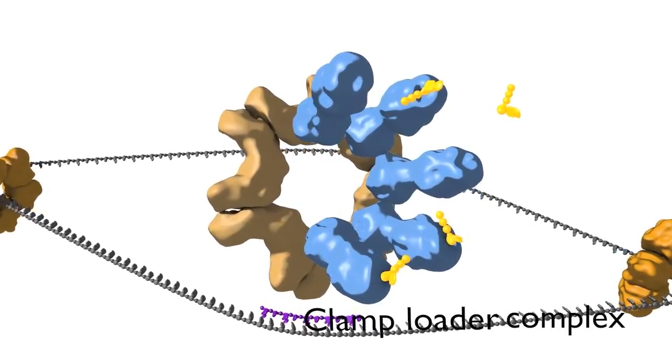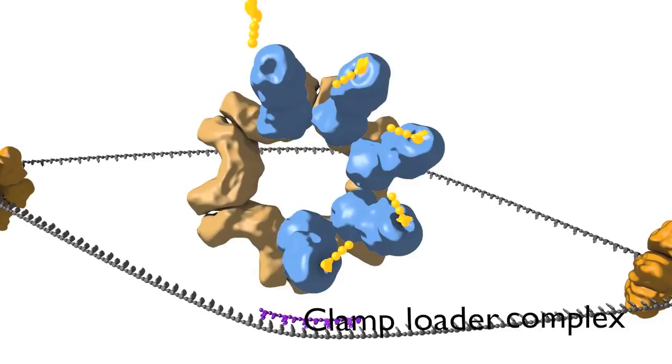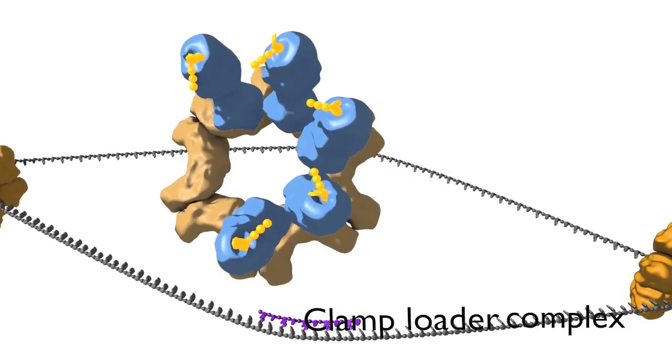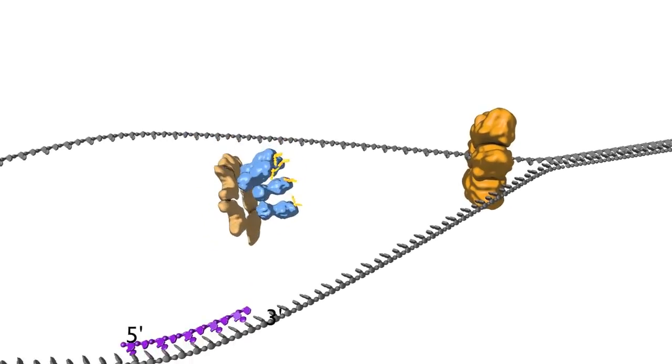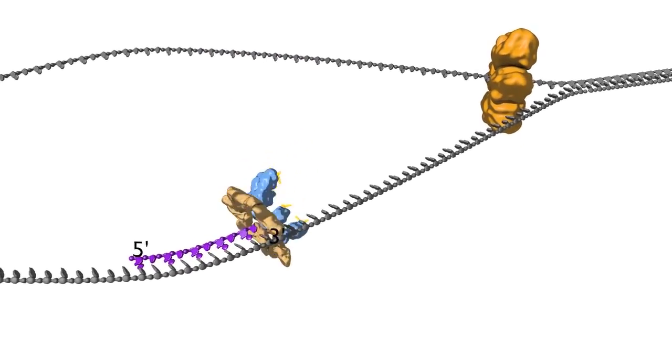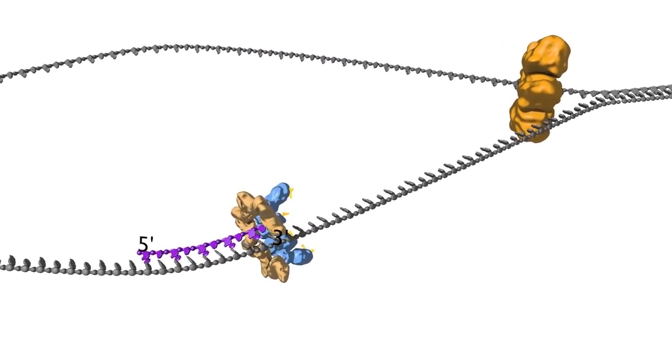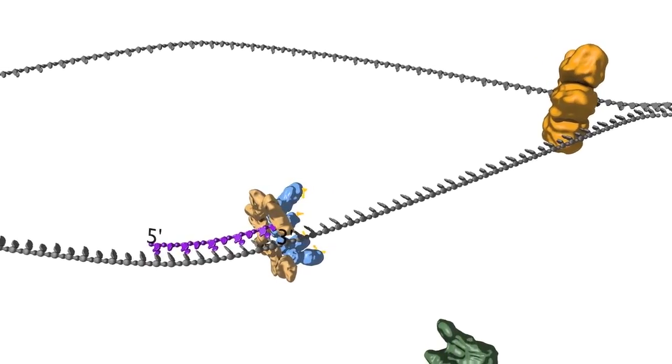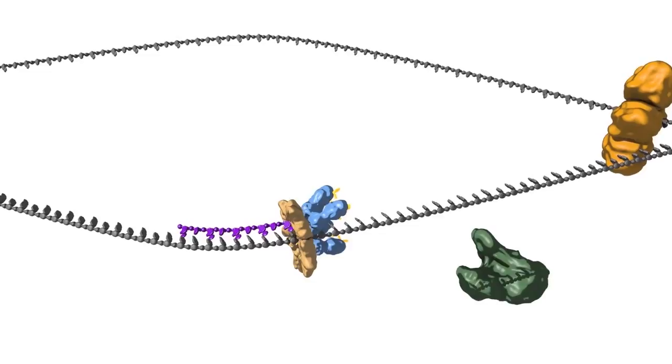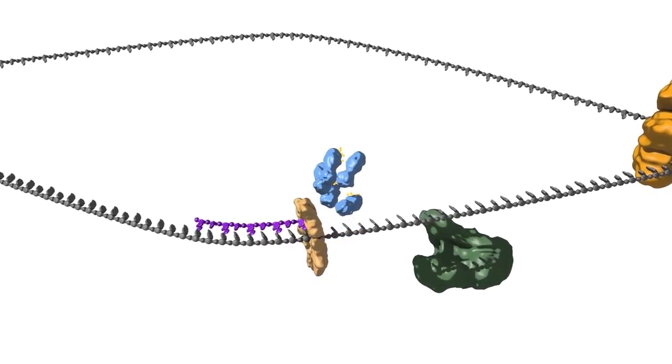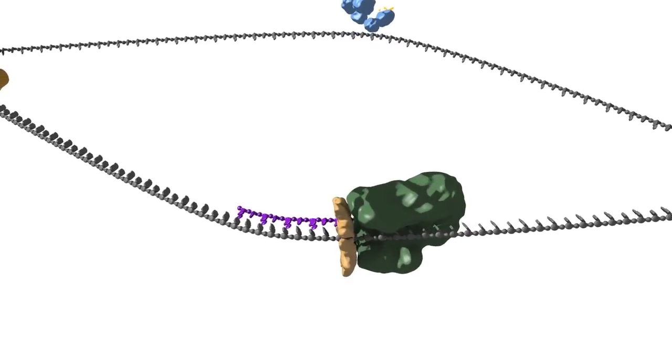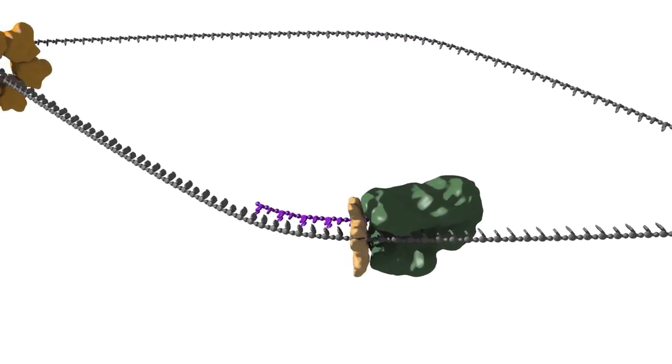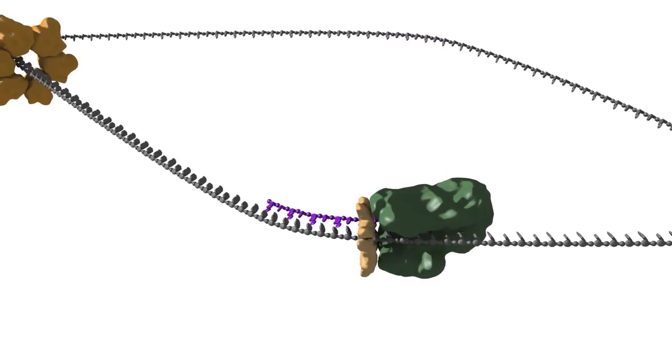The five protein clamp loader complex binds to the sliding clamp, and binding of ATP allows opening of the sliding clamp ring. The opened ring then encircles the template primer junction at the three prime end of the primer. Interaction with the three prime end of the DNA stimulates ATP hydrolysis, and the clamp loader dissociates from the DNA to be replaced by the replicative DNA polymerase. The three prime end of the primer is positioned in the polymerase active site to allow addition of nucleotides to this end.